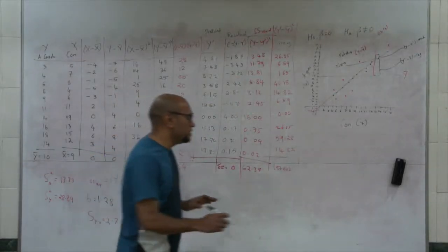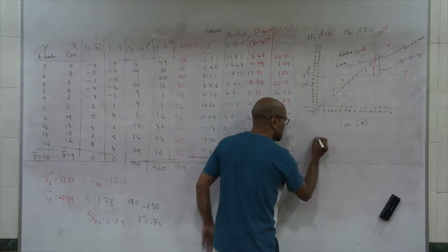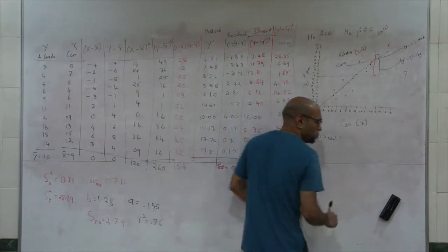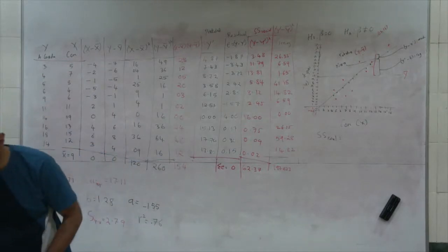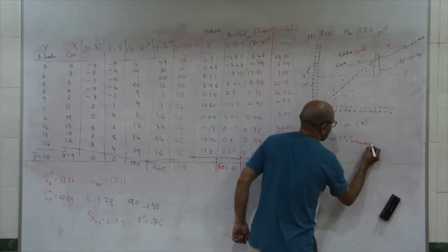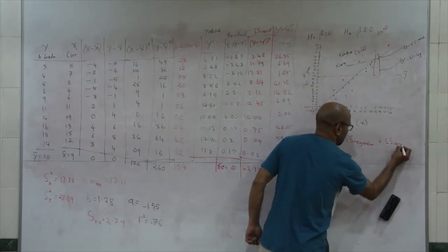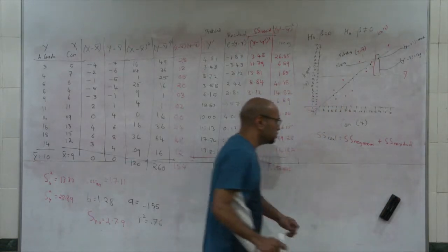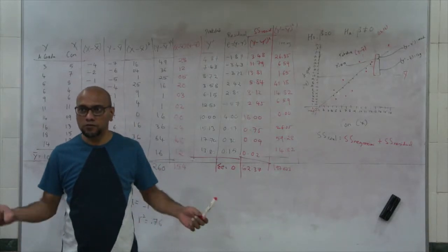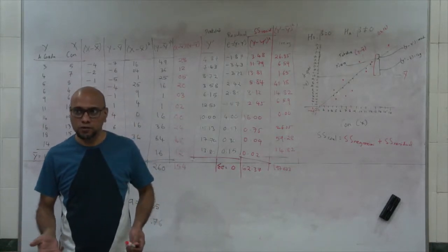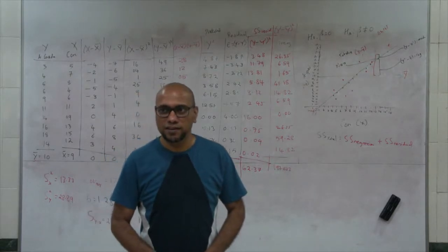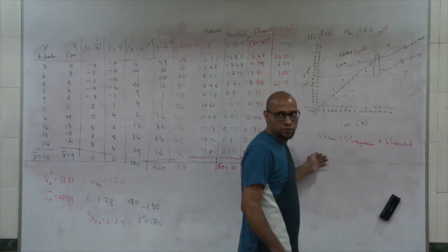Look at the very simple expression: sum of squares total is equal to sum of squares regression plus sum of squares residual. Have you studied ANOVA? This is very much an ANOVA statement — sum of squares total is equal to sum of squares between plus sum of squares within. It's very much an ANOVA model.